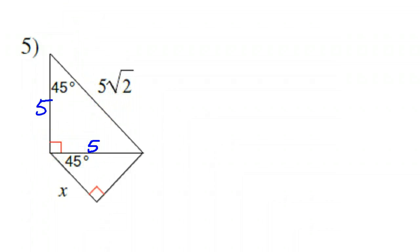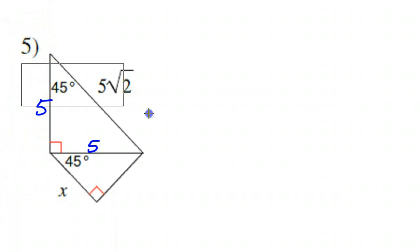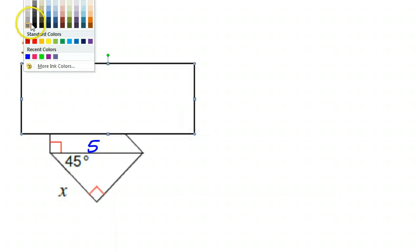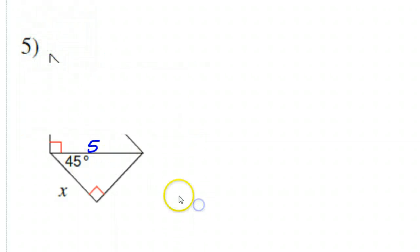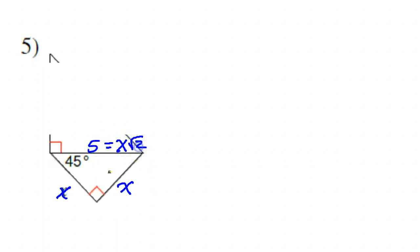Now let's cover this up for a second and just focus on this part down here. This X is in the right position for me to still use X. So this must be like X, X, and then the hypotenuse here would be X radical two.